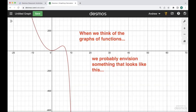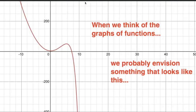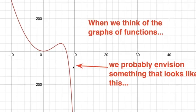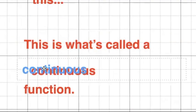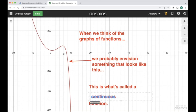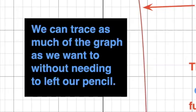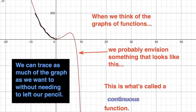When we think about graphs of functions, we're probably thinking about something that looks like this. This is what's called a continuous function. The reason it's called a continuous function is that we can trace as much of the graph as we want to without ever needing to lift our pencil or stop our motion.